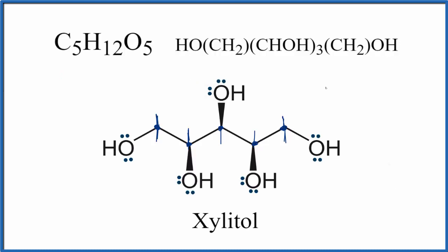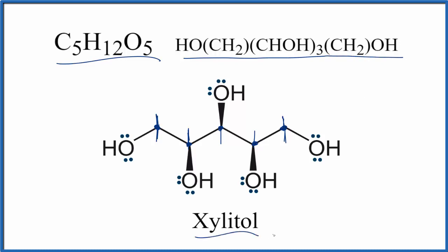So this would be the Lewis structure for xylitol. You can write the hydrogens in if you'd like. This formula does show us how many of each type of atom we have, but to really understand the structure you'd need something a little more explicit like this. This is Dr. B talking about the Lewis structure for xylitol. Thanks for watching.